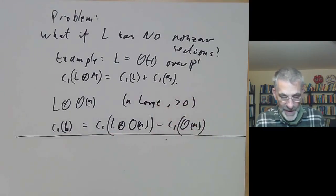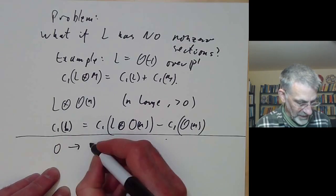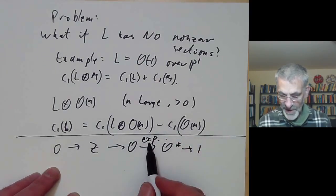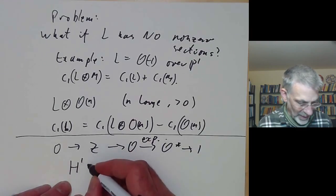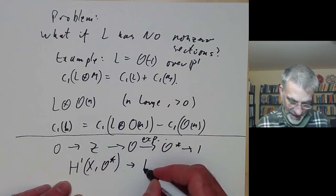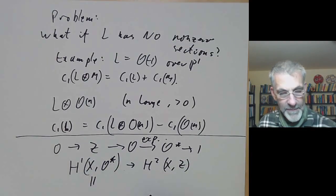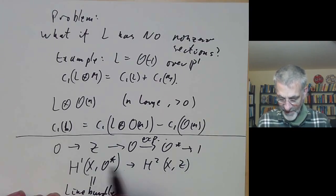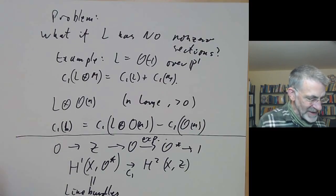By the way, this is by no means the only way to define Chern classes — there are many other ways. For example, if you're fond of sheaf theory and cohomology, you can look at the exponential sequence of sheaves — though this only works in complex analytic geometry, not algebraic geometry. The long exact sequence of cohomology gives a map from H^1(X, O^*) to H^2(X, Z), which more or less classifies line bundles, and this map is essentially just the first Chern class.